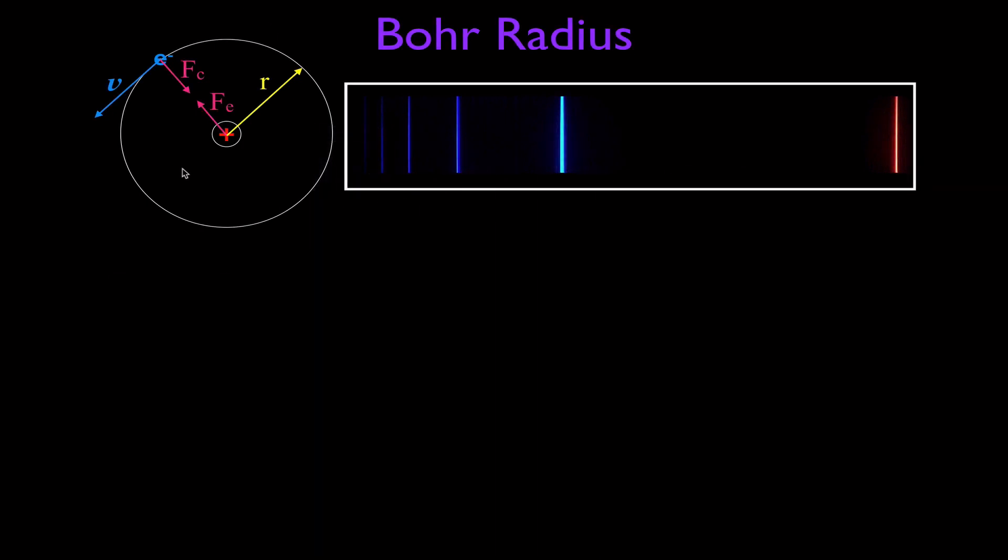So here we have our diagram for the hydrogen atom. We have a positive charge nucleus, a negative charge electron, the electron is going around in this direction. And we know when we have an object traveling in a circular path that the angular momentum for that object L is equal to the mass of the object, in the case of an electron, times the velocity of the electron, times the radius, which is we're going to start with n=1 so this would be the Bohr radius, times the sine of the angle theta.